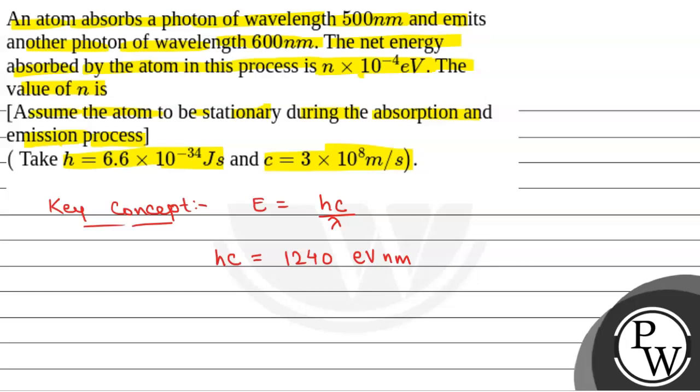Now, we have been given that there is an atom. So suppose this is an atom. It absorbs an energy of E1 and emits an energy of E2.